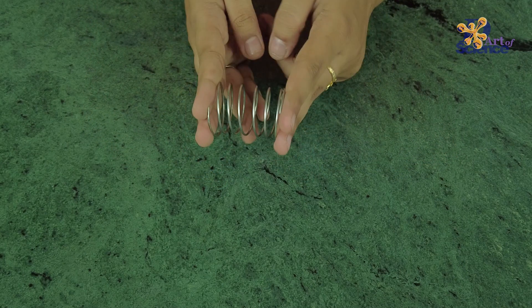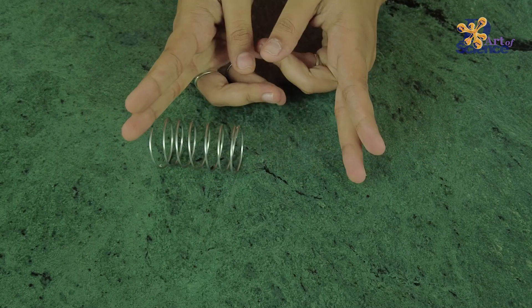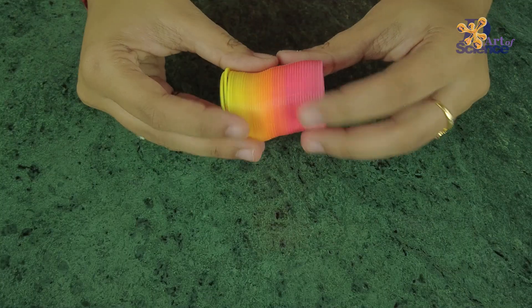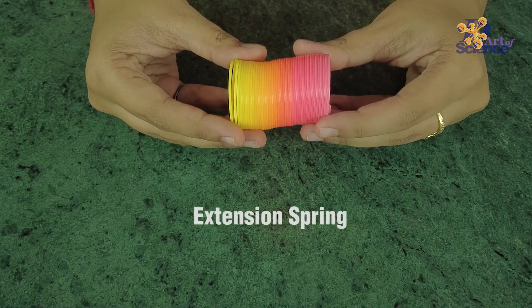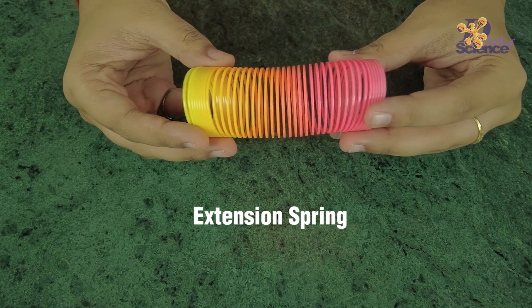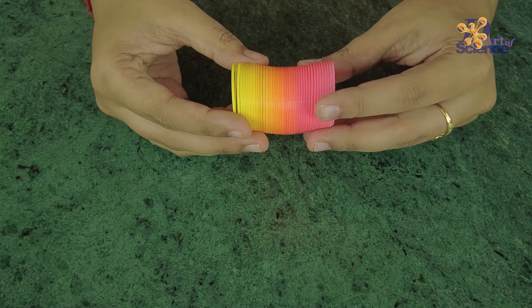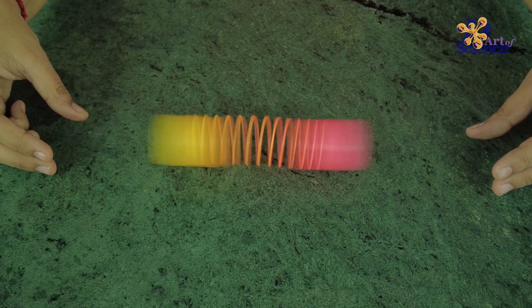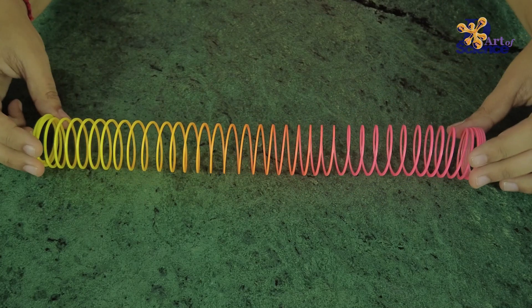A slinky is the opposite. It is a type of an extension spring. The coils of the slinky are close to each other. When we extend the slinky and then leave it, the tension within the slinky pulls its two ends back to their initial positions.